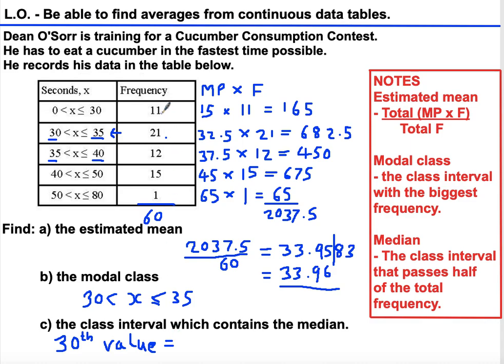The first class interval has 11 values, so that doesn't take us past 30. But if we add 21 values to that, the next 21 values, that would take us to our 32nd value. Therefore, this is the class interval that contains the median because it goes past the middle value. 11 plus 21 takes me to 32, which goes past the 30th value. This is also the class interval that contains the median.